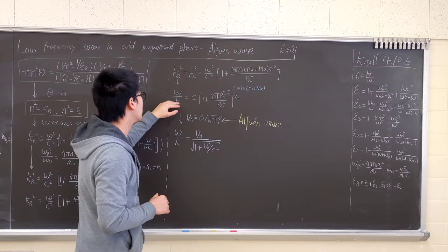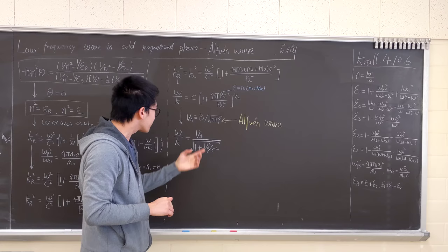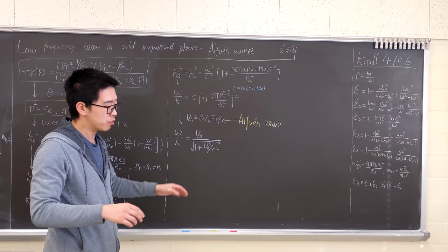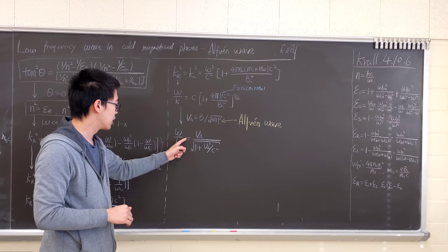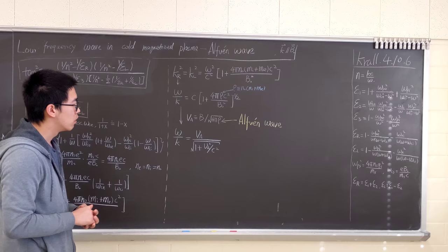And of course, omega over k is a phase velocity. I would define the phase velocity v_A as B_0 over square root of 4 pi rho. Then we'll wind up with a really commonly used expression: omega over k equals v_A over square root of 1 plus v_A squared over c squared.